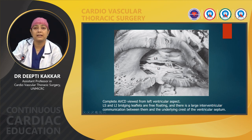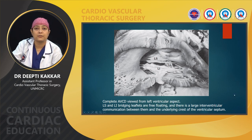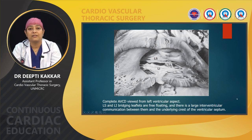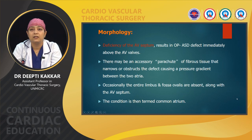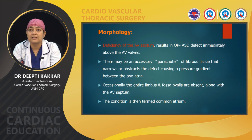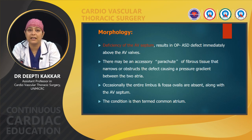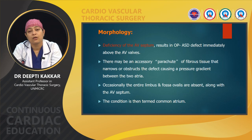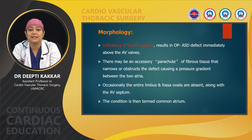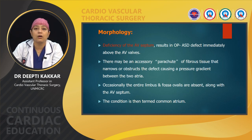The primum ASD cannot be well appreciated in this picture because the image is from the left ventricular aspect. Deficiency of the AV septum results in the ostium primum ASD immediately above the valves. There may be an accessory parachute of fibrous tissue causing narrowing or obstruction with a large gradient between the two atria. Occasionally the entire limbus and fossa ovalis may be absent along with the AV septum — in this case the condition is known as a common atrium.